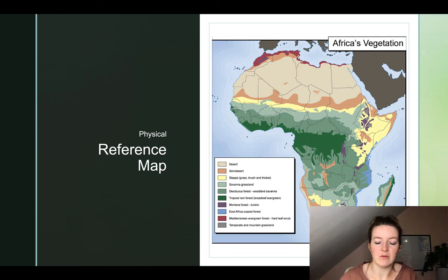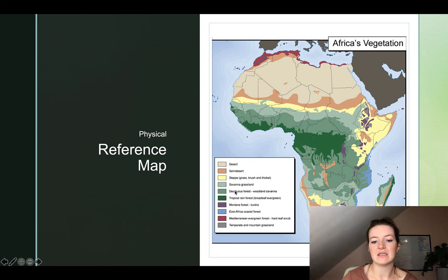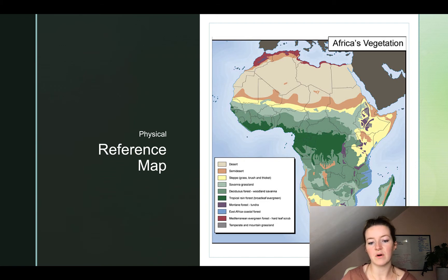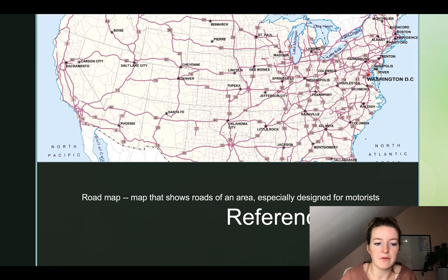The key shows things like desert, semi-desert, steppe, deciduous forest, Mediterranean evergreen forest, and temperate and mountain grasslands. Next up in reference maps are road maps. A road map shows roads of an area and is especially designed for motorists.